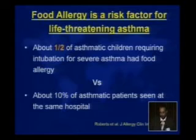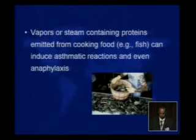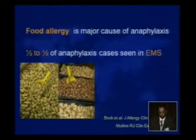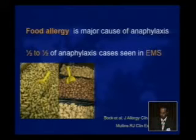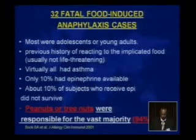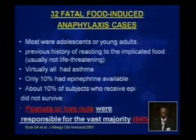Food allergy is a risk factor for life-threatening asthma. About half of asthmatic children requiring intubation for severe asthma had a food allergy, compared to only 10 percent in the control group. Vapor or steam containing protein emitted from cooking food like fish can induce asthmatic reactions and even cause anaphylaxis. Food allergy is a major cause of anaphylaxis — one third to one half of anaphylaxis cases seen in emergency medicine — with peanut and tree nut as the major allergens. In one study of 32 fatal food-induced anaphylaxis cases, most were adolescents or young adults with a previous history of reacting to the implicated food, virtually all had asthma, and peanut or tree nut were responsible for 94 percent.